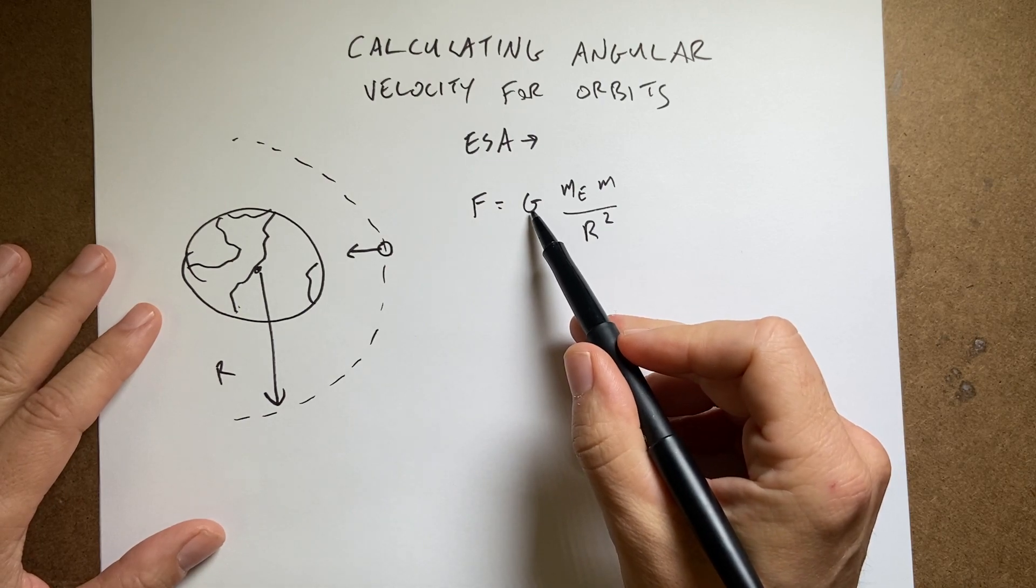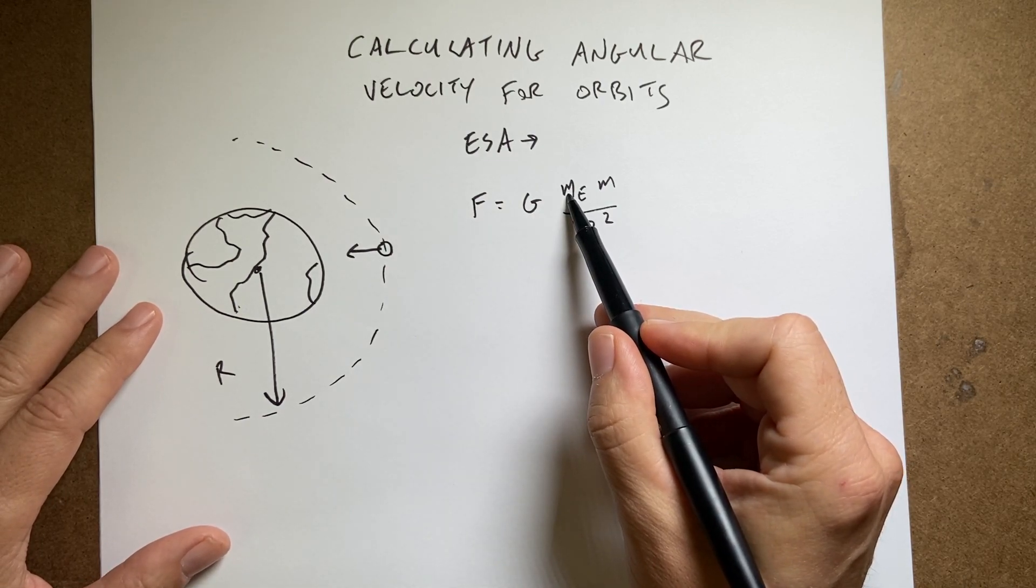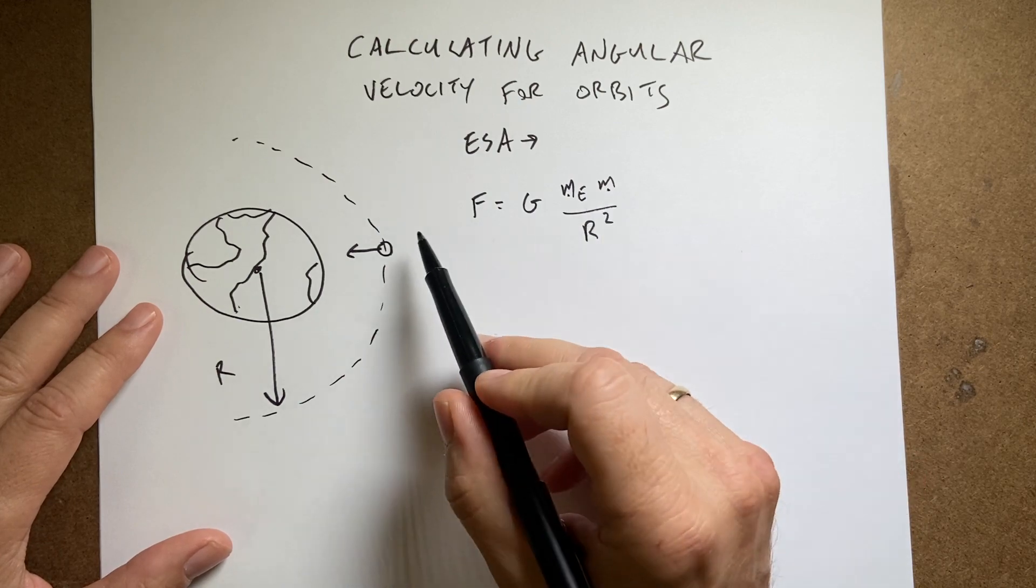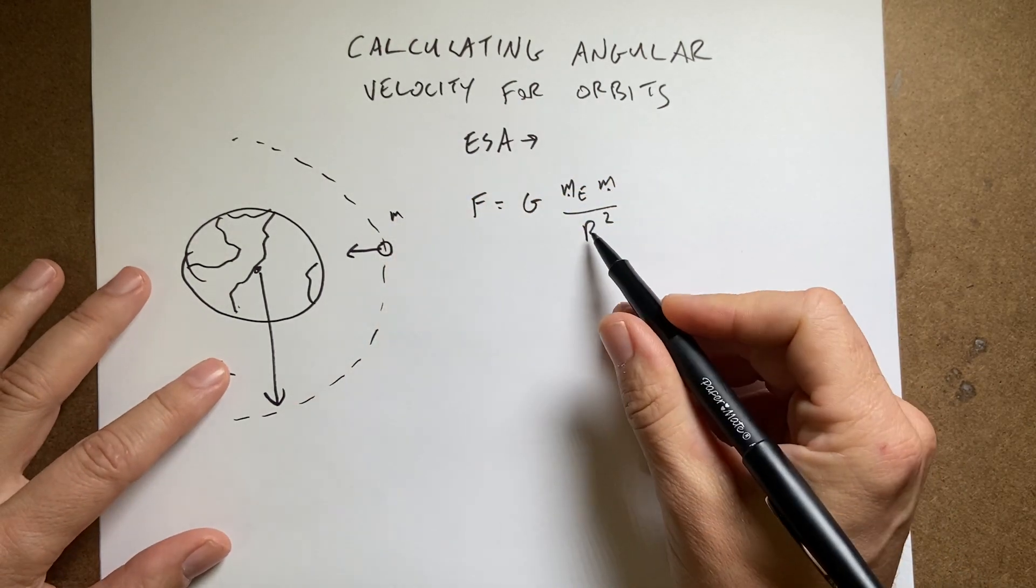So in this case, G is the universal gravitational constant, Me is the mass of the Earth, and M is the mass of this object right here. And then r is that distance.